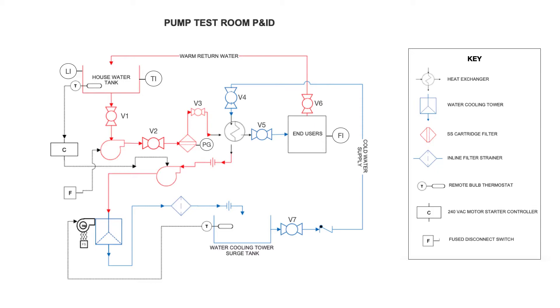The water cooling tower surge tank on the bottom of the screen has cold water in it, goes through a ball valve which is labeled as V7, then goes through a one-way check valve. The cold water supply then travels through yet another ball valve, valve 4, into the heat exchanger.